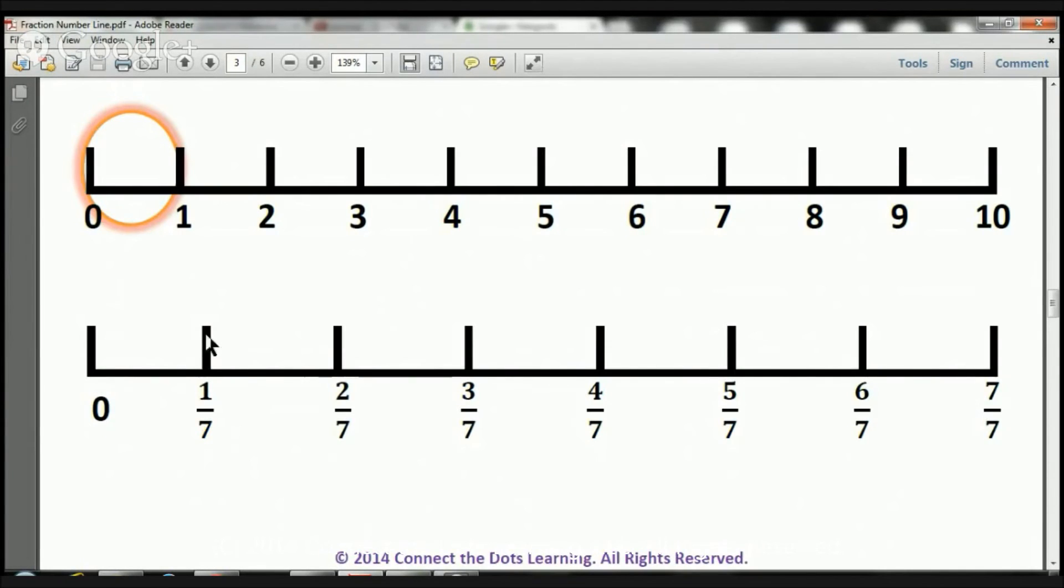From 0 to here, that's 1 7th, 1 piece. From 0 to here, we've got 2 7ths, 2 pieces.